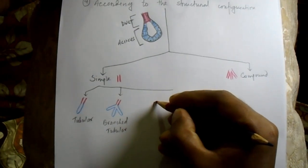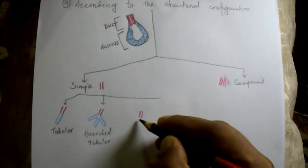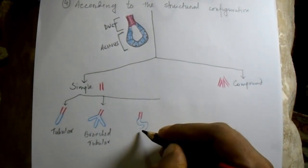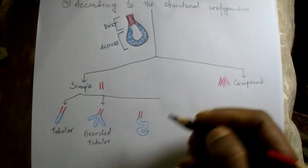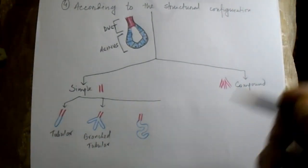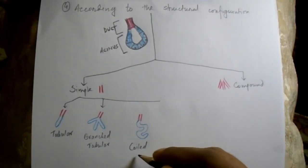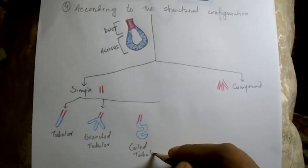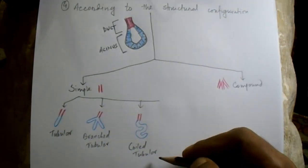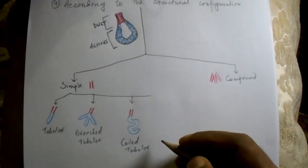The next subtype has a single unbranched duct and the secretory part is coiled and tubular in shape. This is termed the simple coiled tubular gland. This type of gland is present in the sweat glands.